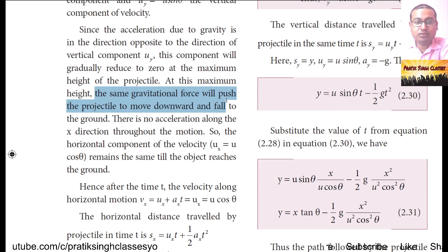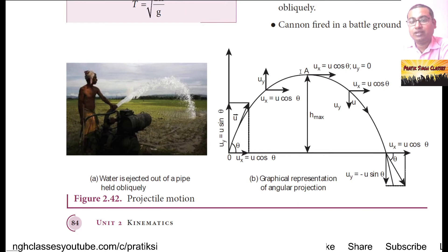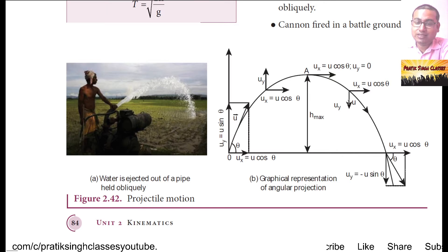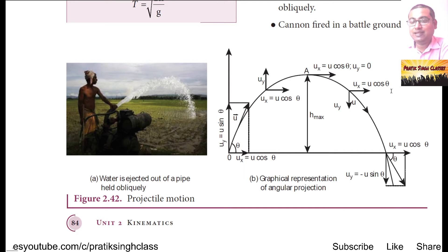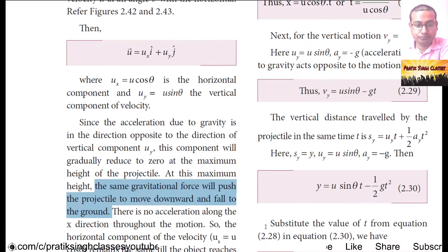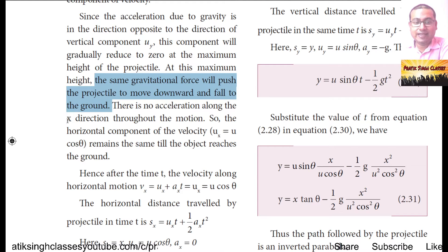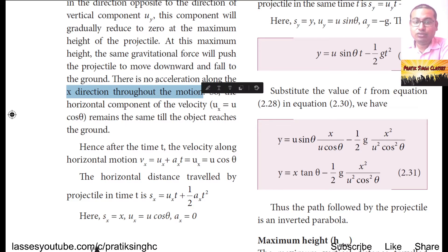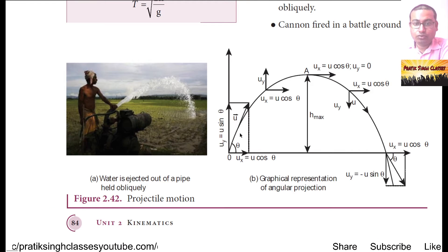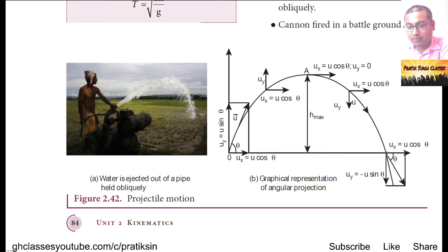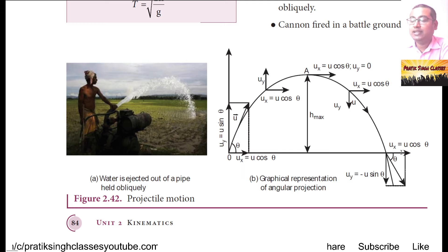At maximum height, the gravitational force pushes the projectile to move downward and fall to the ground. When the particle is at maximum height A, due to gravity it moves downward and also forward. The downward velocity uy is positive because it is in the direction of acceleration, and the forward velocity in the x-direction is u cosθ. There is no acceleration along the x-direction throughout the motion, so the horizontal component of velocity remains constant.